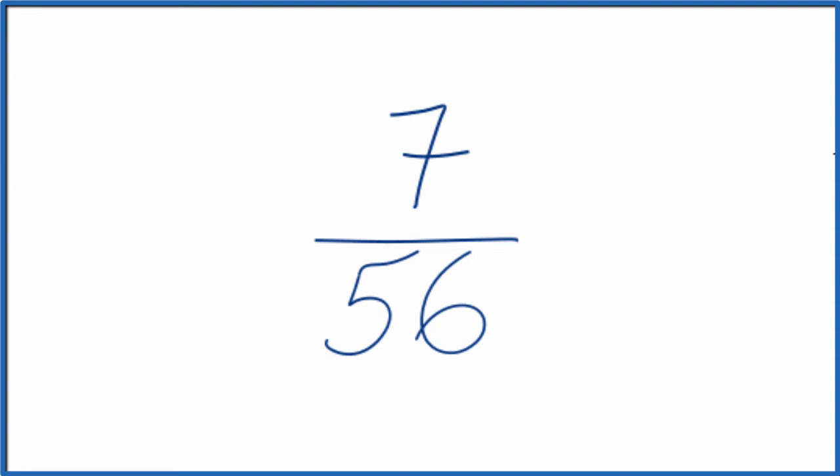So what we need to do is find a common factor of both 7 and 56, something that divides evenly into 7 and 56. So let's write the factors for 7 and 56.